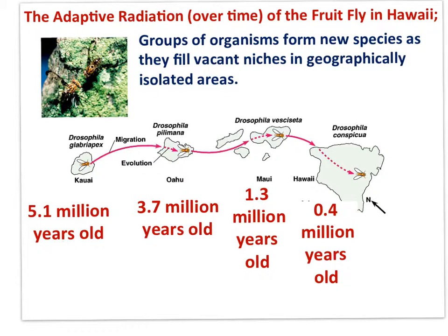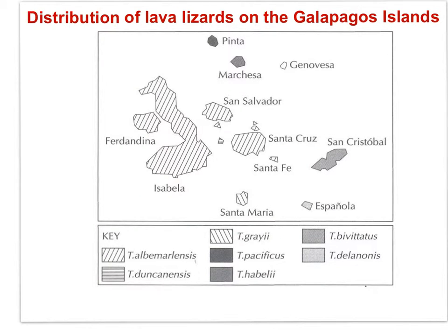The fruit fly in Hawaii underwent adaptive radiation as it migrated from older ancestral islands to unoccupied niches on the newer islands. As the fly moved to new islands and those unoccupied niches, reproductive isolation occurred, resulting in allopatric speciation — different species of flies on each island. Once lizards reached the Galapagos Islands, 600 kilometers from the coast of Ecuador, they radiated to different islands, filling available niches in each different location, and once reproductively isolated, allopatric speciation occurred, producing different species in different locations.